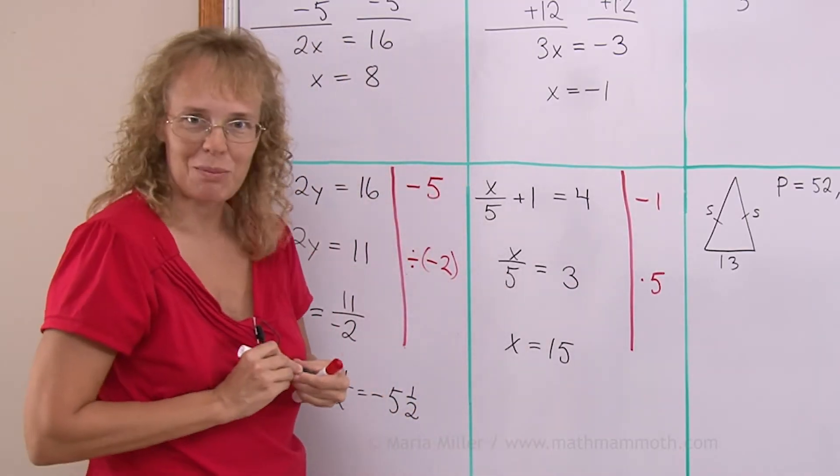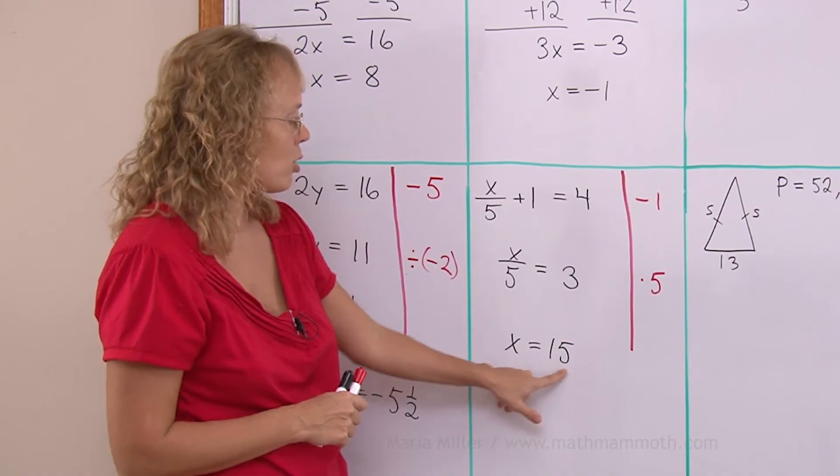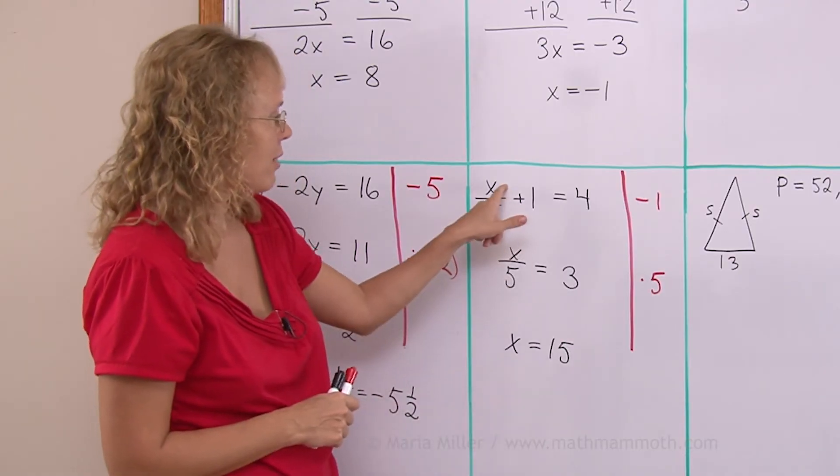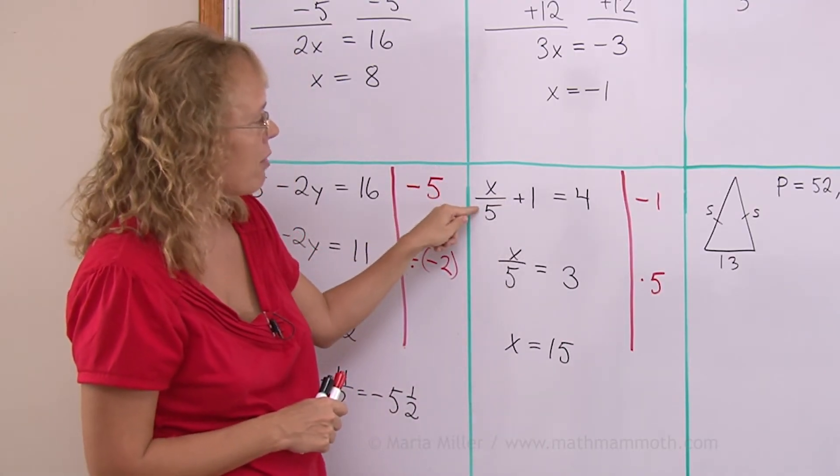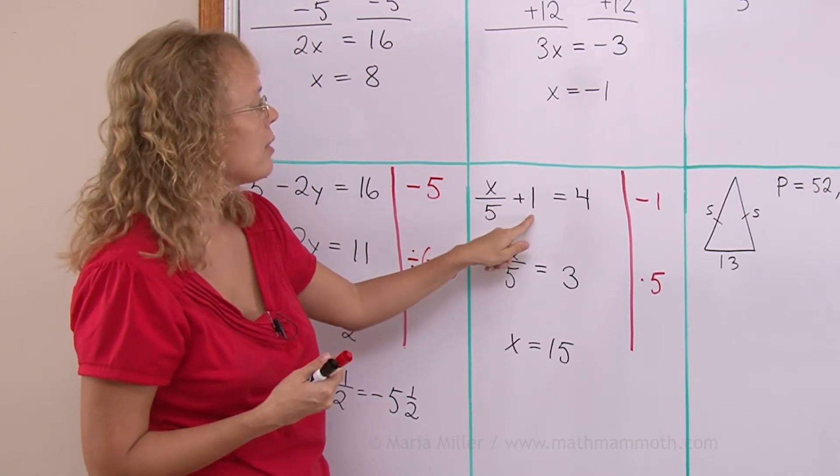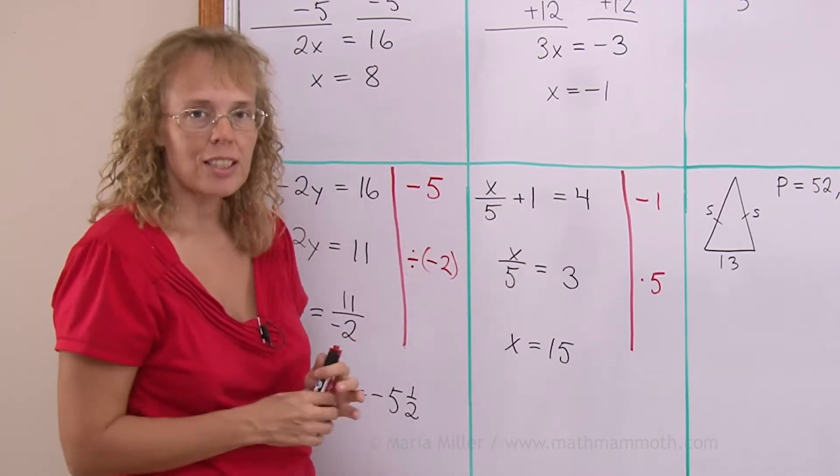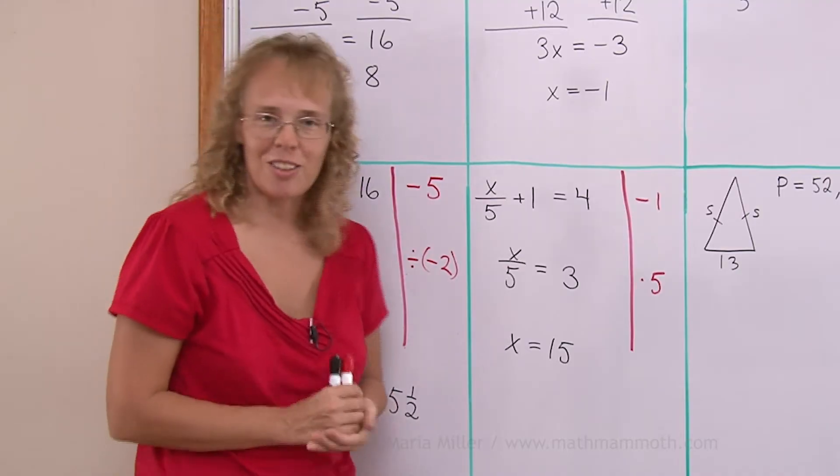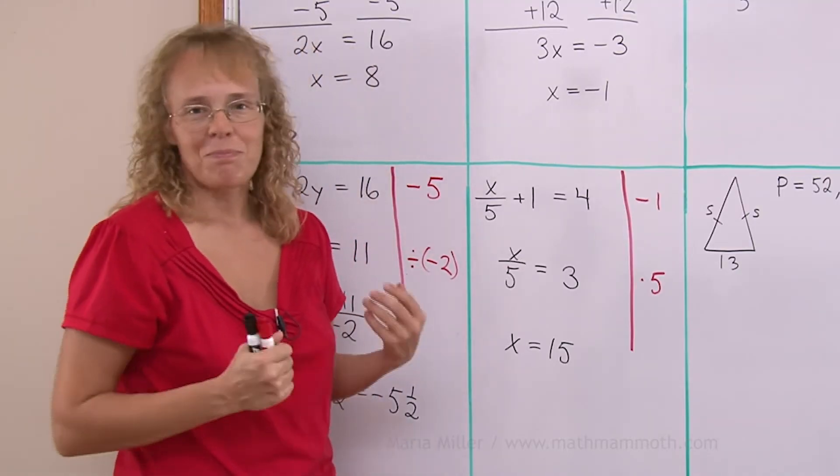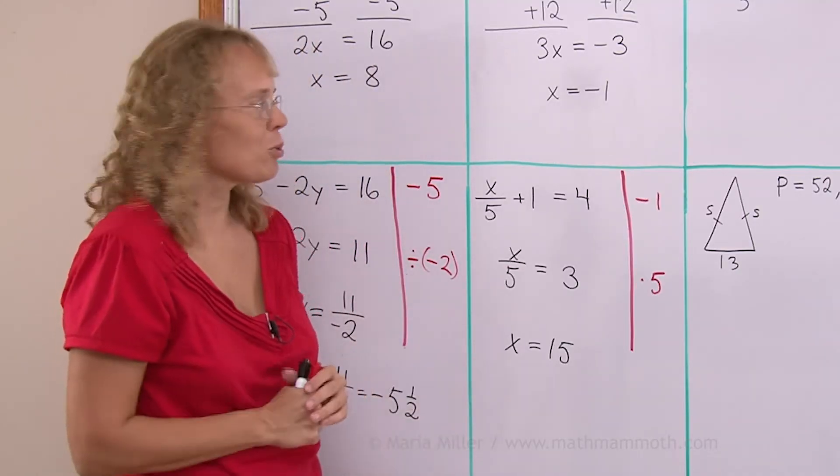That was pretty simple again. And you should check your solution by putting 15 in place of x here. 15 divided by 5. That's 3. 3 plus 1. Yeah, it's 4. So it checks. I'm not taking time in the video though because it would make my video much longer if I check each of my solutions.